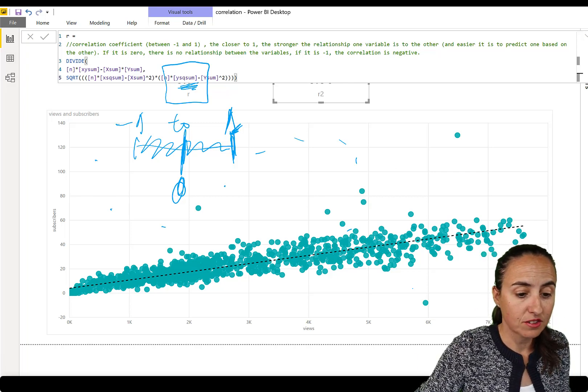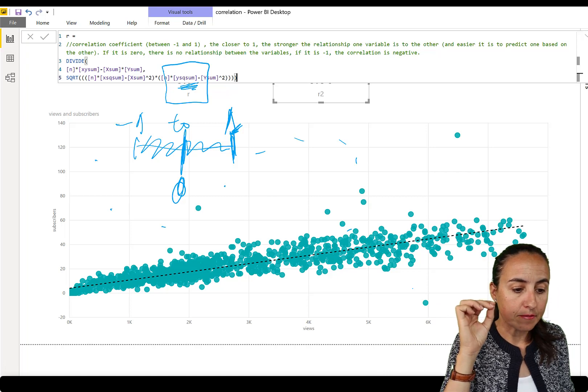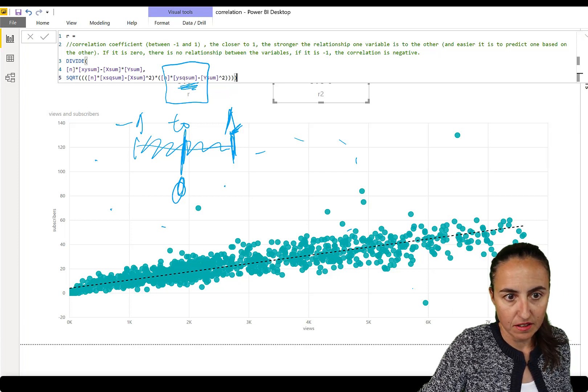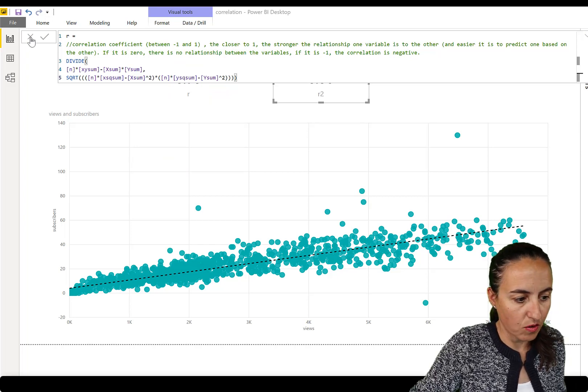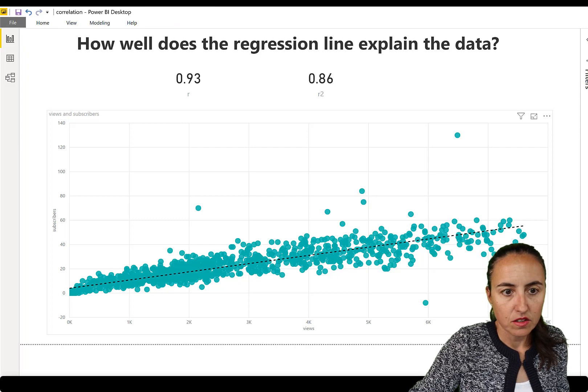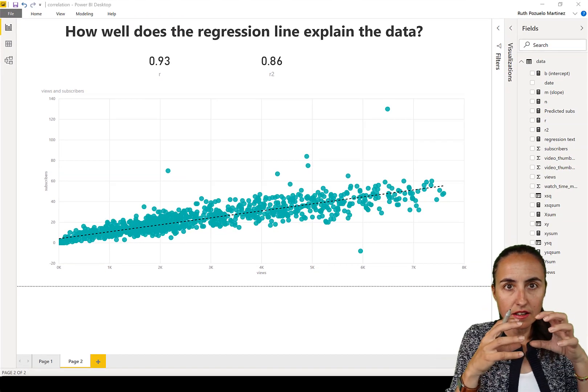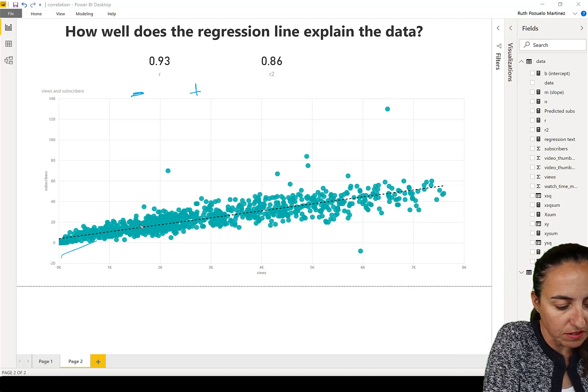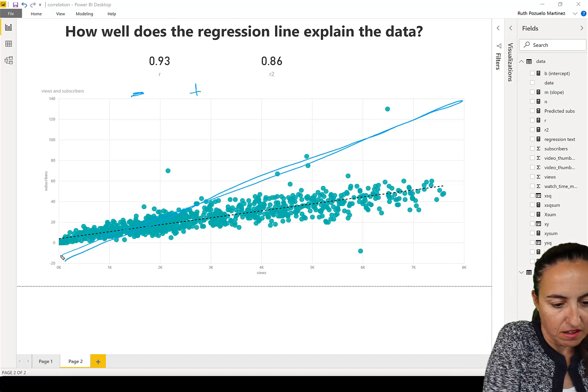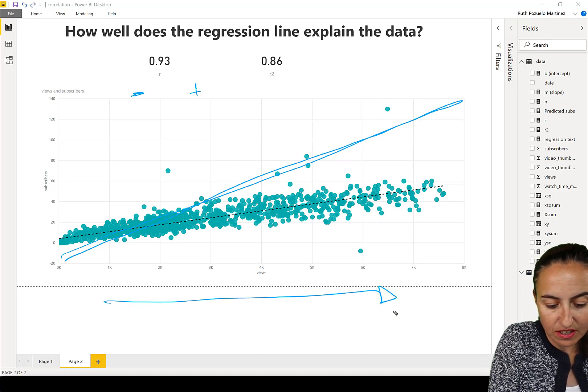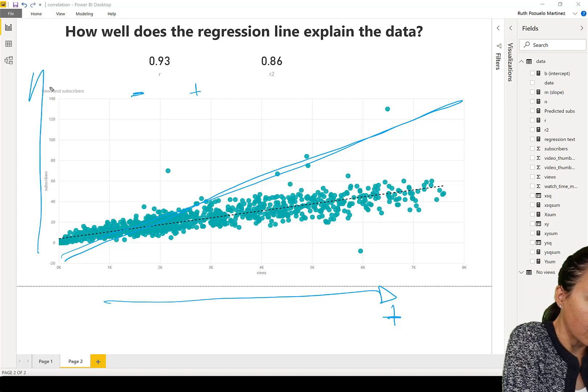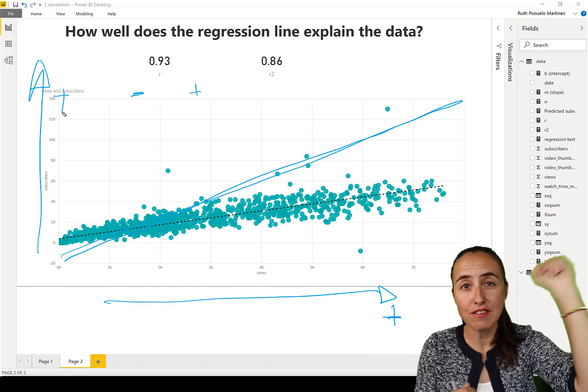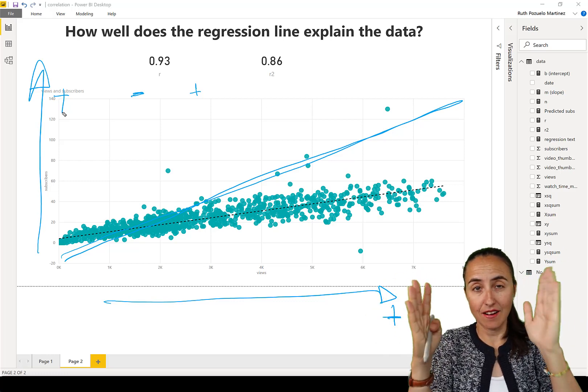So the sign of the correlation value, the sign of r. The higher the number, the higher the strength. But then if it is positive or if it's negative. So if it's positive, it goes like that, which basically says that the higher the value that value is, the higher that value will be. So increasing views will increase subscribers. That means that it's a positive correlation. And the number will be from zero to one somewhere in there, a positive correlation.